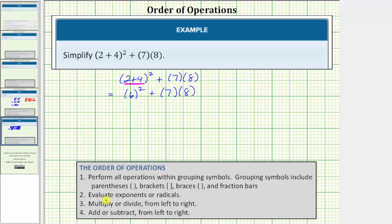Step two, we evaluate exponents or radicals. Notice how we have six squared, or six raised to the second power. So the next step is to evaluate six squared. Six squared means we have two factors of six, which equals six times six, which equals thirty-six.